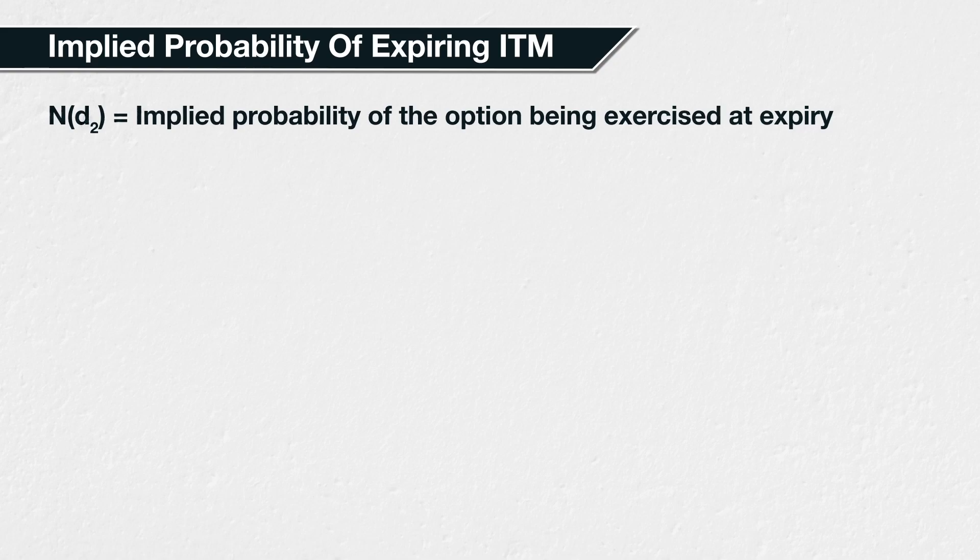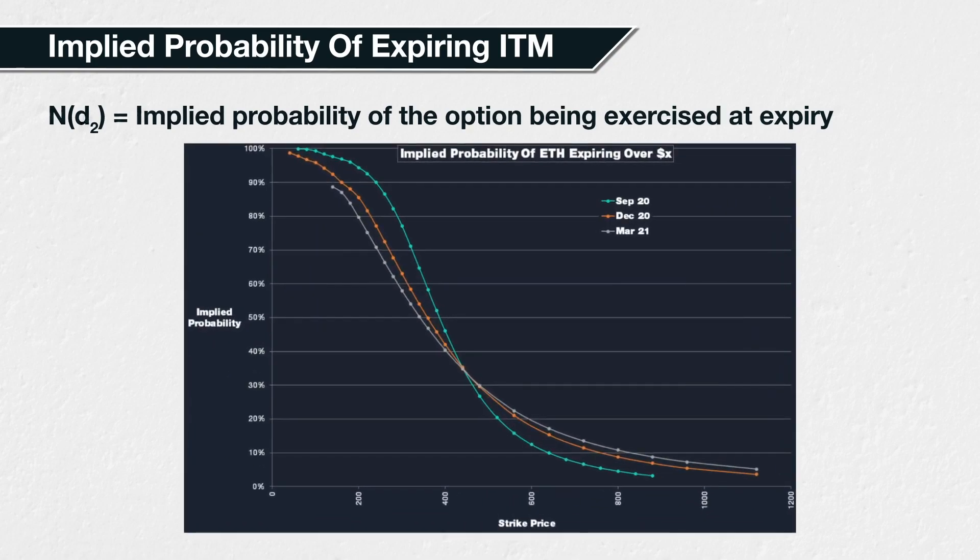Using current option prices, or more specifically their implied volatility, we can create a chart of these implied probabilities. The chart we plot tells us how the options market is currently pricing the probability of the underlying price being above each strike price on the expiry date. This is an example of the type of chart that is possible, that I created in August 2020.